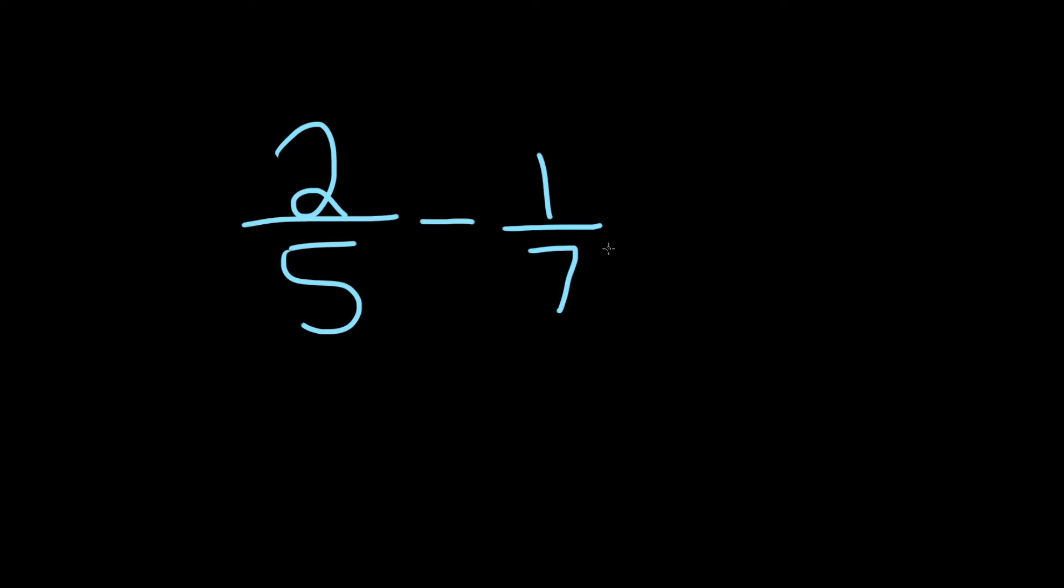So to find the common denominator, all you have to do is multiply the denominators. So you take the 5, and you multiply it by the 7, and that gives you 35.